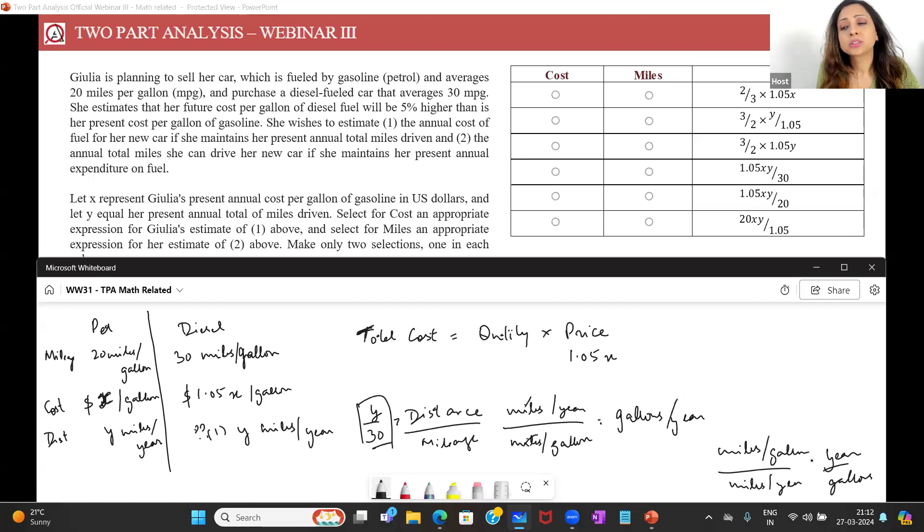What makes sense is gallons per year because it tells me the amount of fuel that is consumed, gallons in every year. So this becomes your quantity becomes y by 30, and it makes sense also.